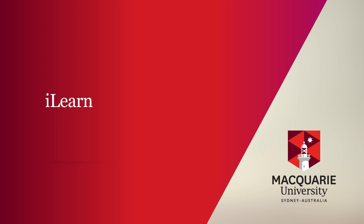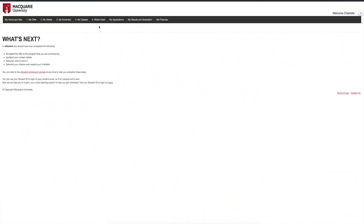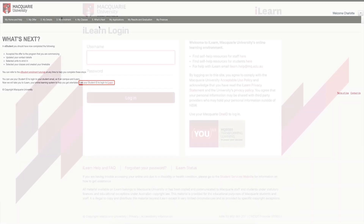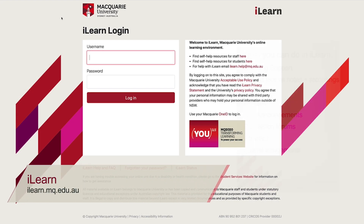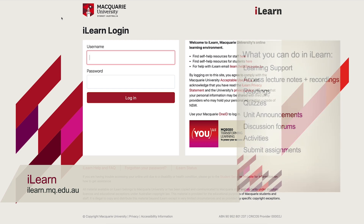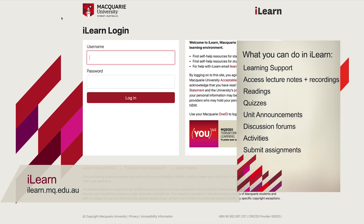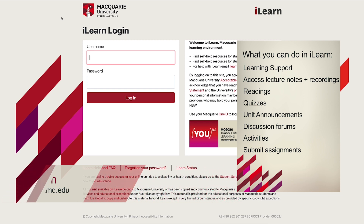iLearn is Macquarie University's online learning environment. This is where you will access all the learning materials and support for all your units. You can access lecture notes, lecture recordings via Echo360, readings, quizzes, discussion forums and activities available for students online. This is a very important resource for you to use throughout your studies.